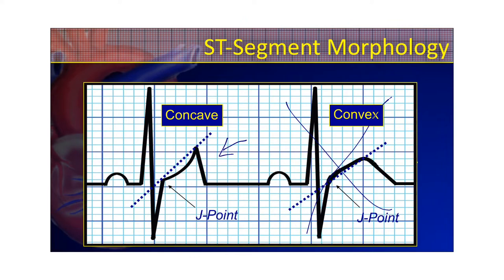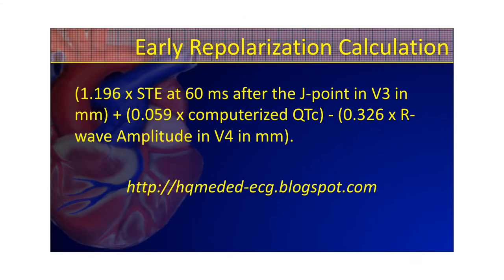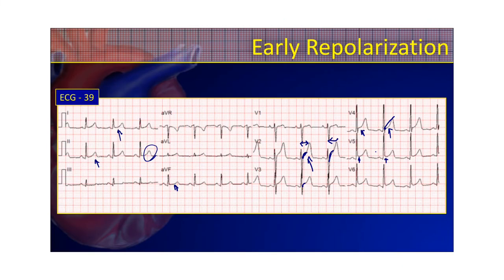I keep stressing how hard it is to differentiate between early repol and acute anterior wall MI. But if you really wanted to, you could use Dr. Stephen Smith's ECG blog. He has a formula on there where you put in different information from the EKG — the amplitudes of the QRS complexes, the amount of ST elevation — and by doing these things, you can, with decent certainty, be able to identify early repol using his formula.